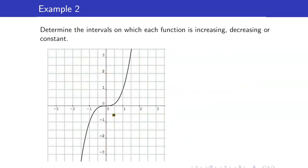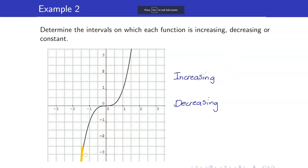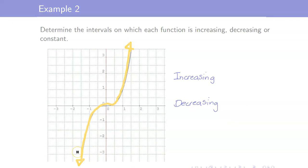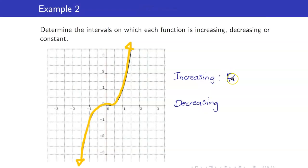Let us determine the intervals on which this function is increasing, decreasing, or constant. When we say that a function is constant, there is an interval for which there is a horizontal line. For example, on this interval — let's call this 17 — the value of y, let's say this is 5, the y-coordinates are all equal to 5. So hence, the function is constant on the interval 17. Notice that it is increasing everywhere. If you trace the graph, you are always climbing up. So hence, it is increasing on the set of real numbers, and it is not decreasing on any interval.